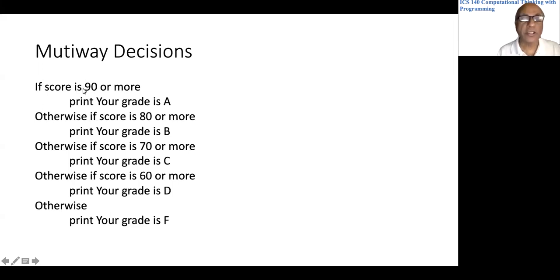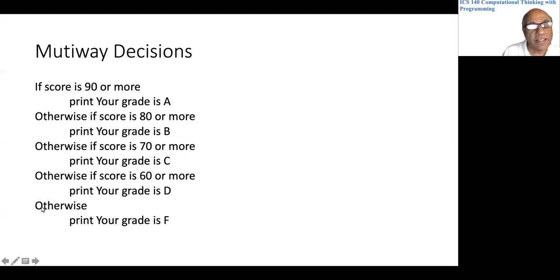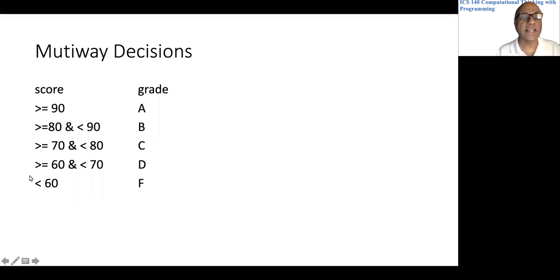It is not 90 or more, and it is not even 80 or more, so we know the score is less than 80. If the score is 70 or more, the student receives a C. Similarly, if we know the score is less than 70 and it is 60 or more, we print grade D. Finally, there is an otherwise attached to that if — at this point we know the score is less than 60, so we print grade F. That logic satisfies the table.